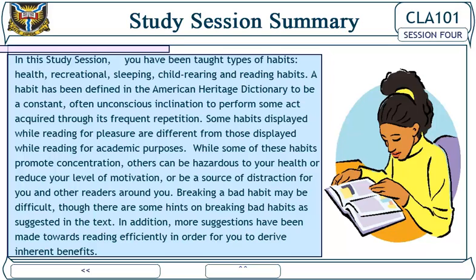Study session summary. In this study session you've been taught types of habits — health, recreational, sleeping, child-rearing, and reading habits. A habit has been defined in the American Heritage Dictionary as a constant, often unconscious inclination to perform some act acquired through its frequent repetition. Some habits displayed while reading for pleasure are different from those displayed while reading for academic purposes. While some of these habits promote concentration, others can be hazardous to your health, reduce your level of motivation, or be a source of distraction for you and other readers around you.